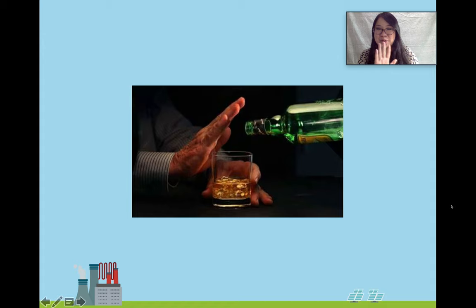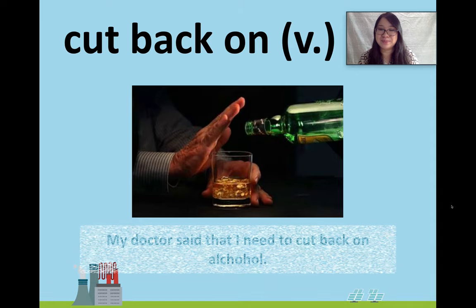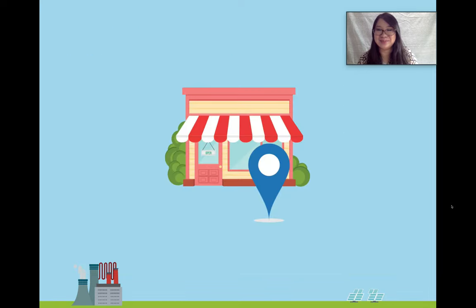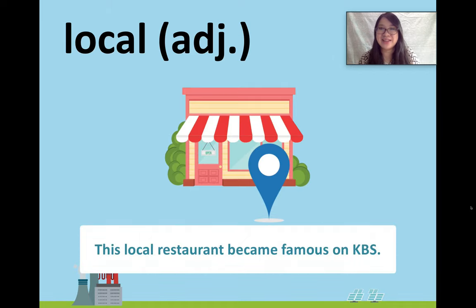Next word: cut back on is a verb. My doctor said that I need to cut back on alcohol. What do you think it means? Next, we have a little restaurant or cafe and a map pin. Local — adjective. This local restaurant became famous on KBS.